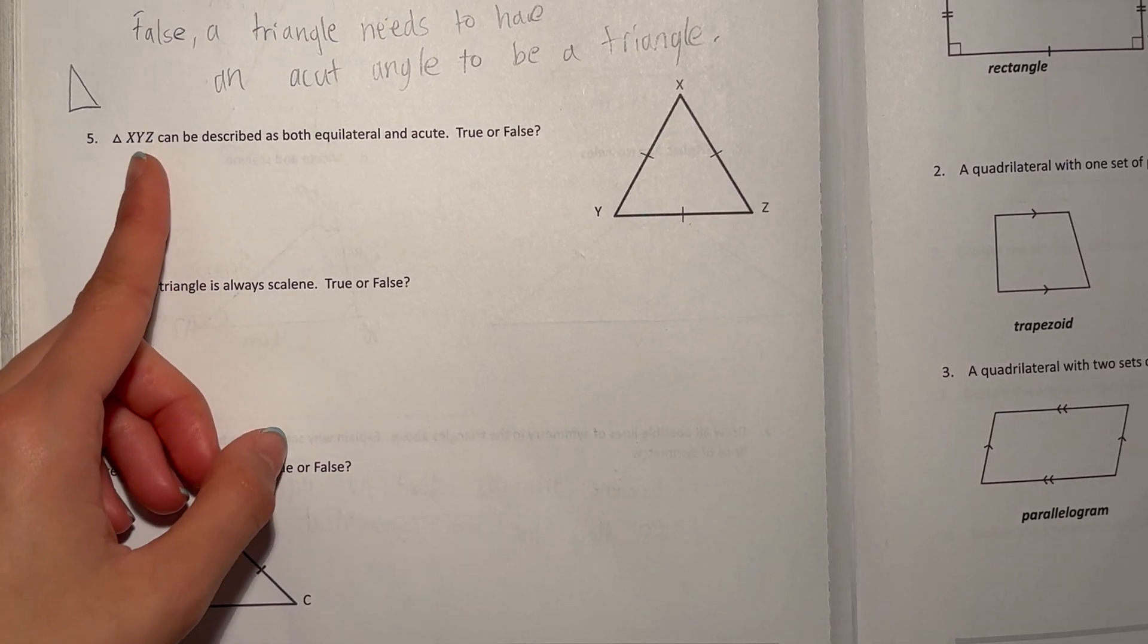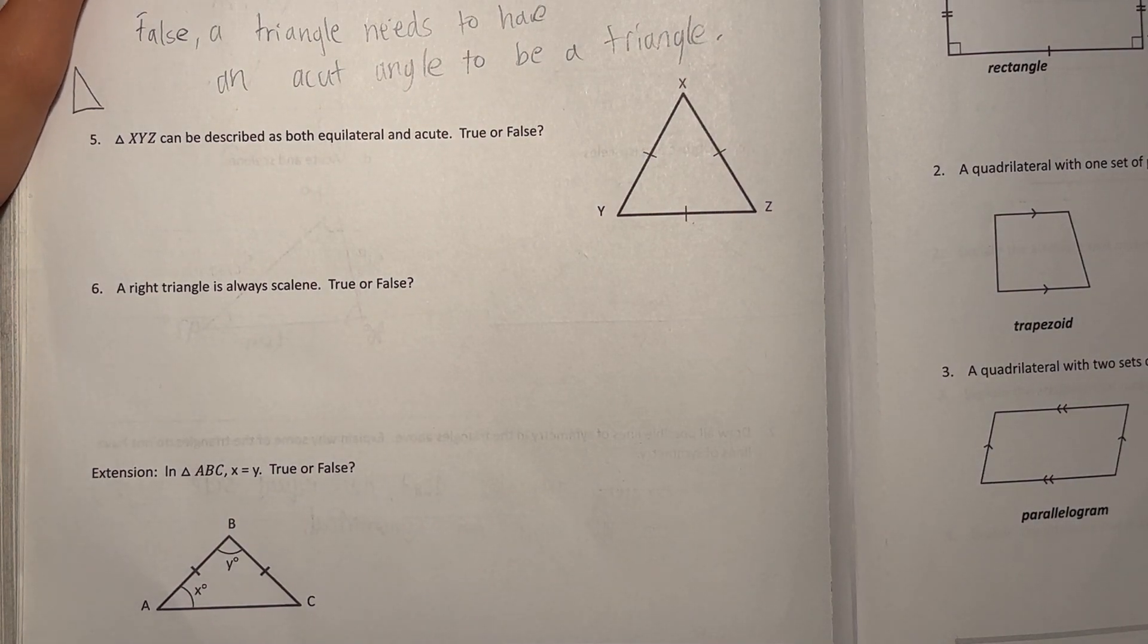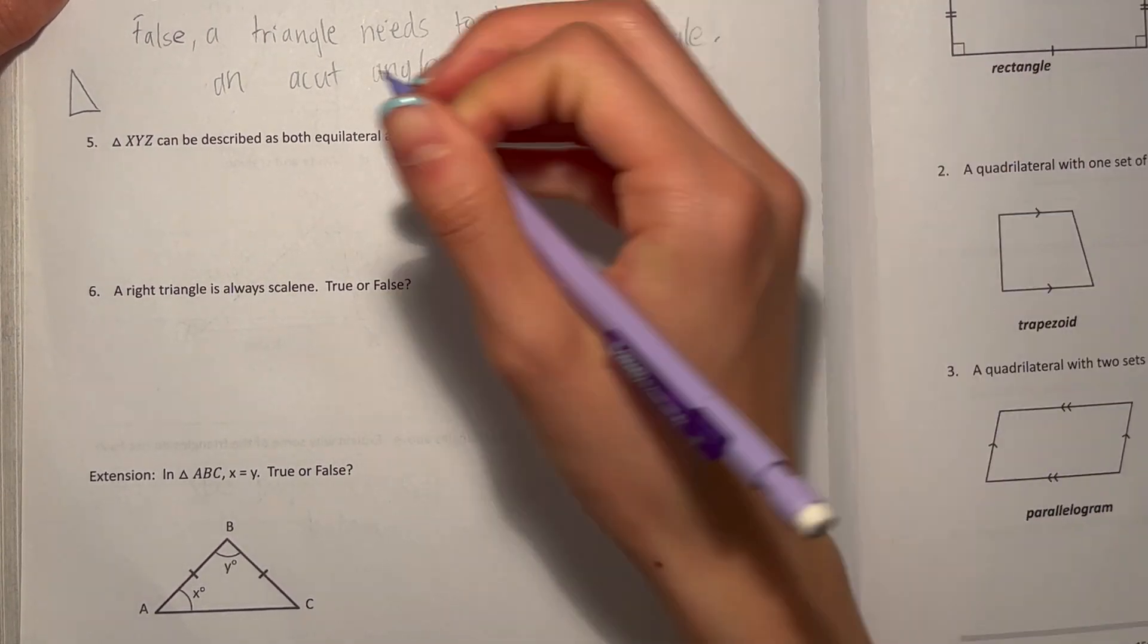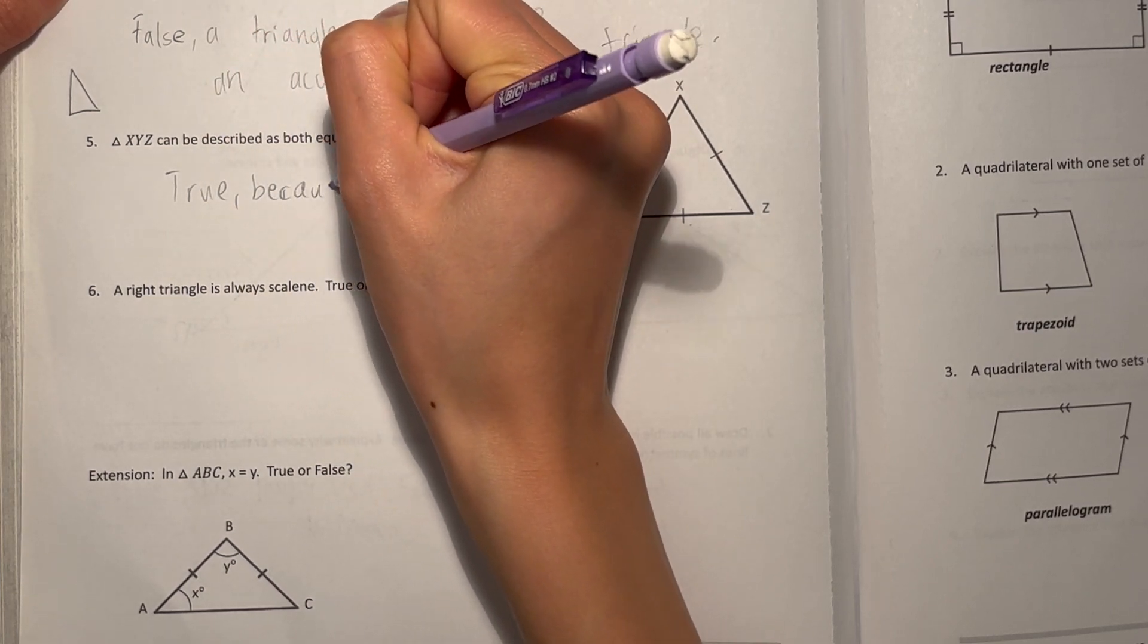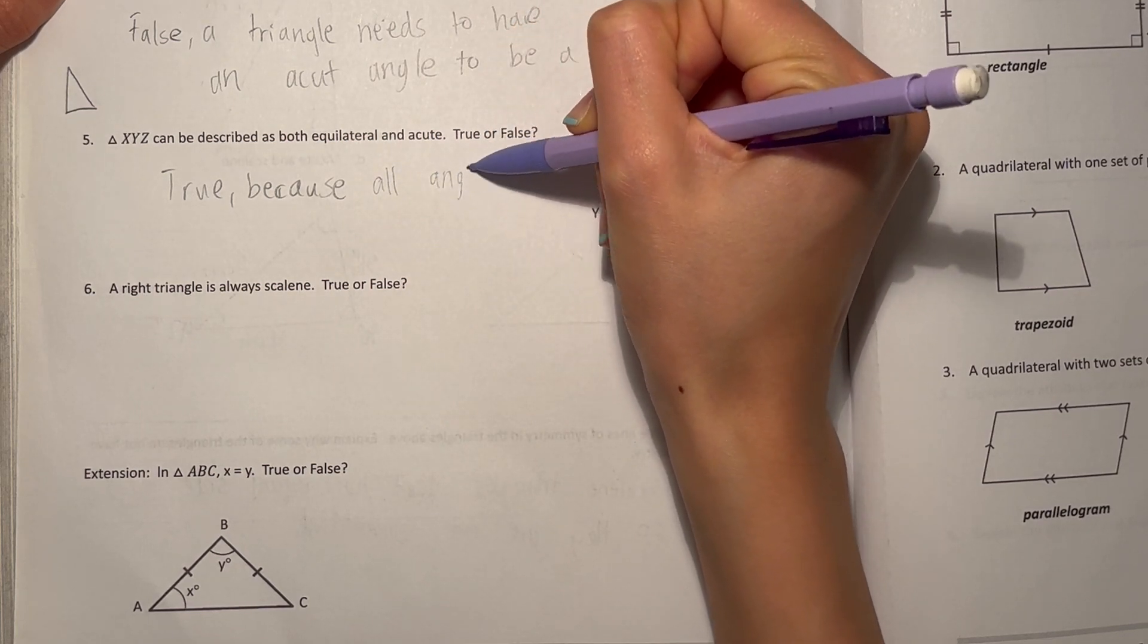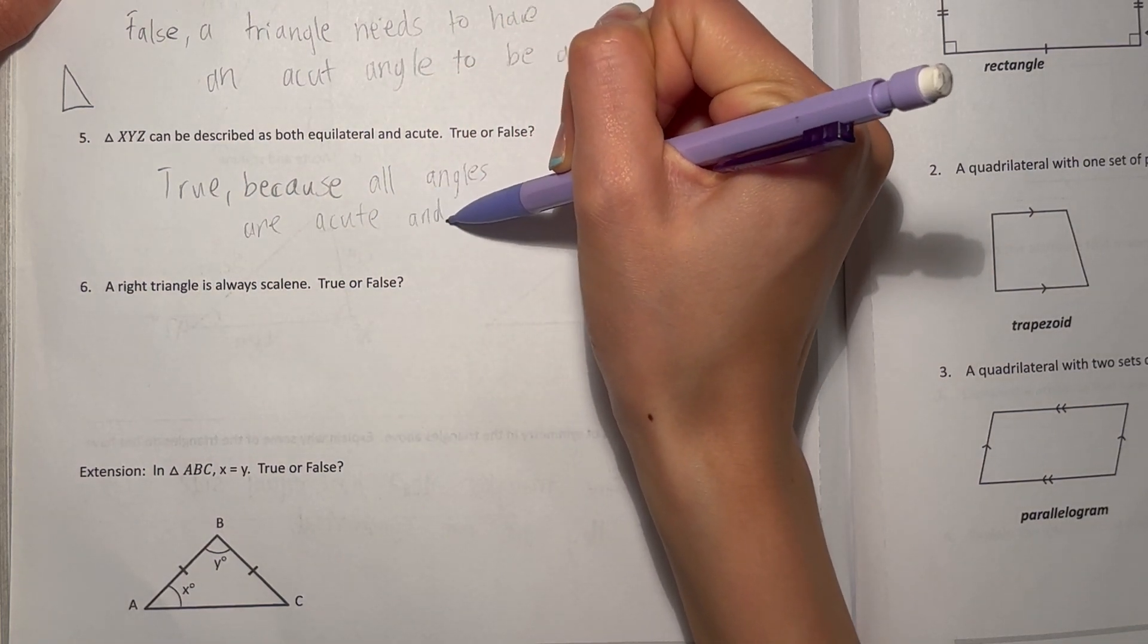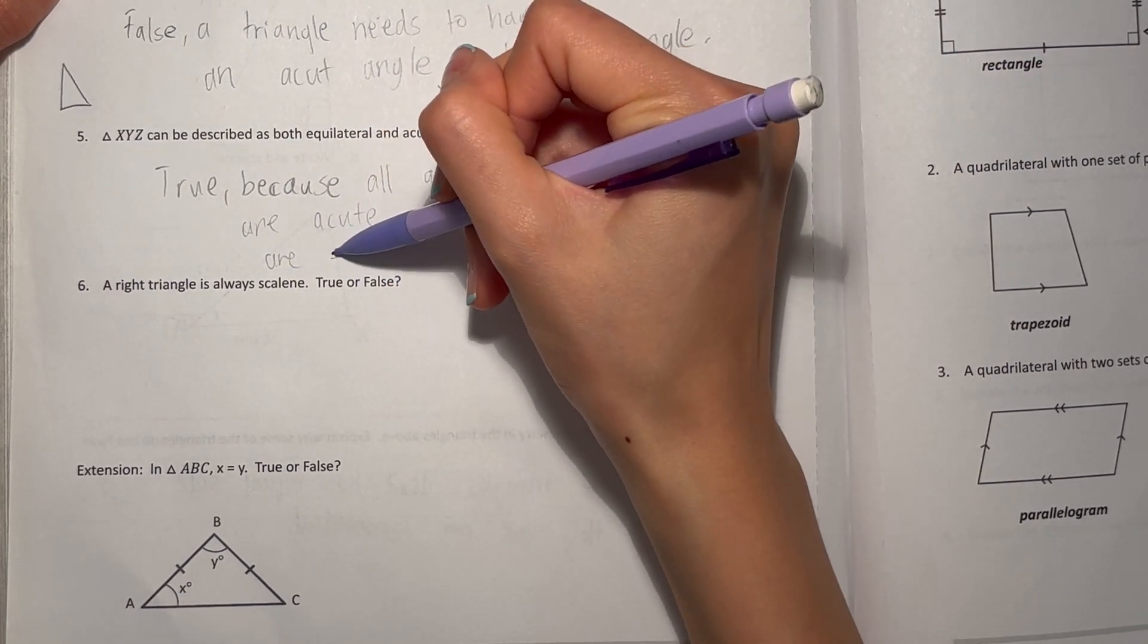Number five: triangle XYZ can be described as both equilateral and acute, true or false. True, because all angles are acute and they're all equal. So true. Because all angles are acute and the sides are equal.